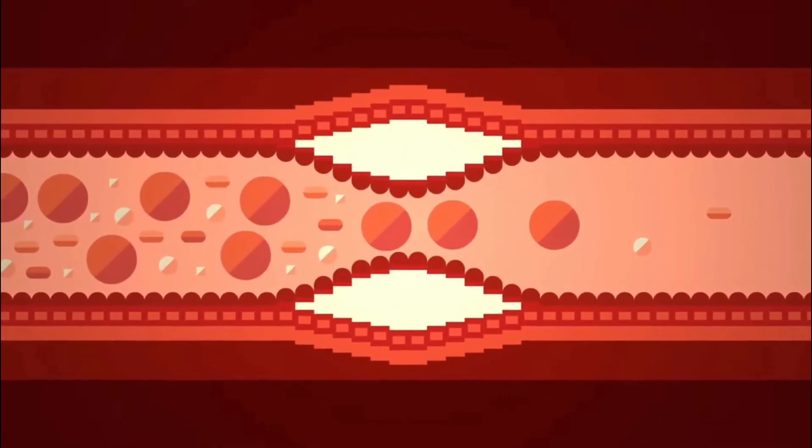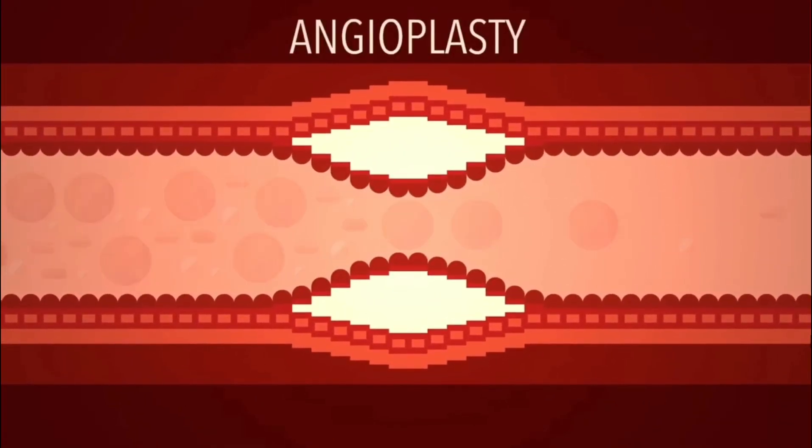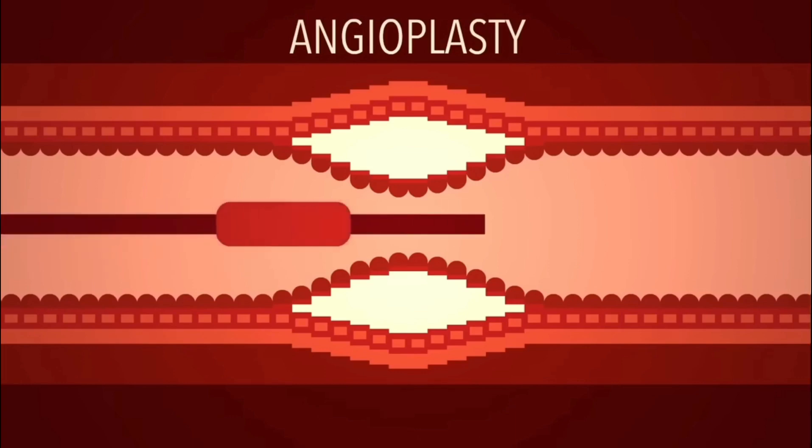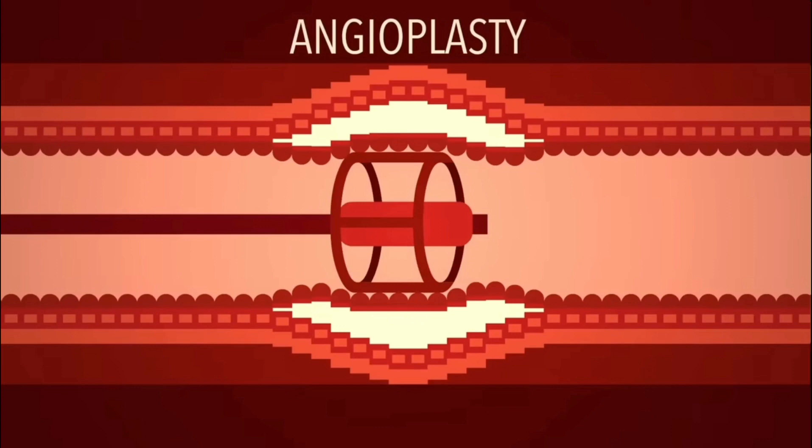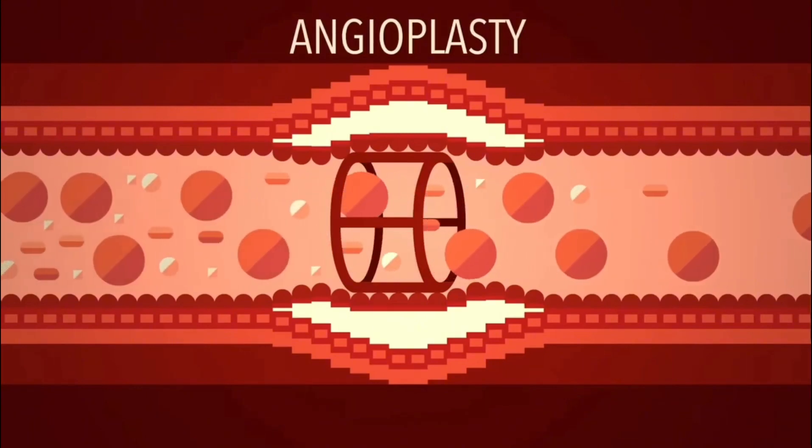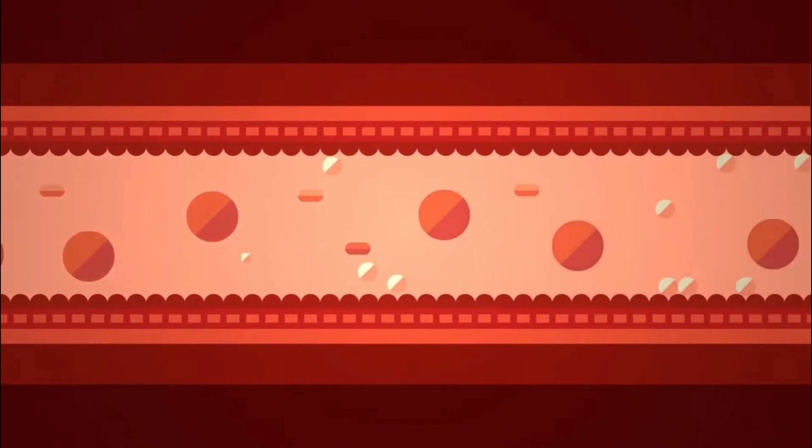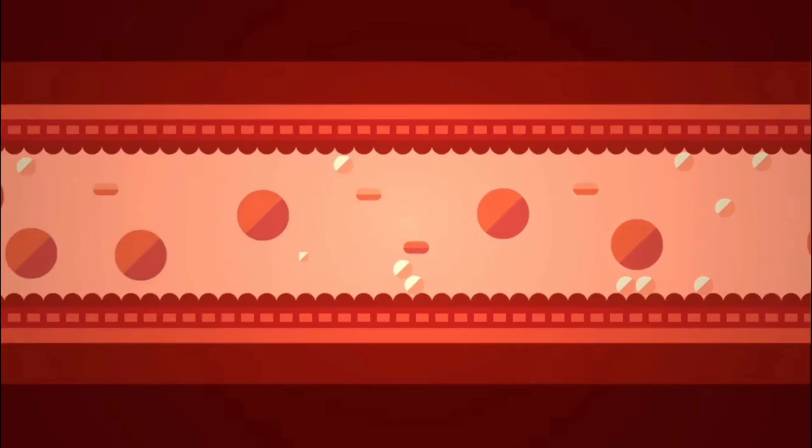Medical interventions such as angioplasty can alleviate clogged blood vessels. During angioplasty, a catheter equipped with a deflated balloon is inserted into the obstructed vessel, which is then inflated to widen the passage, and if necessary a stent is placed to maintain proper blood flow. Now the blood can do its job and deliver oxygen and other nutrients to the tissues.